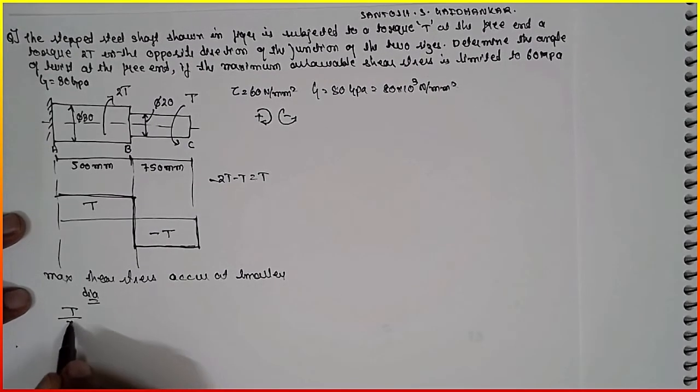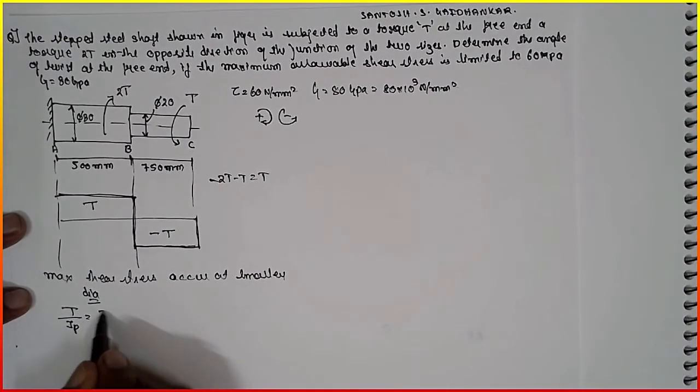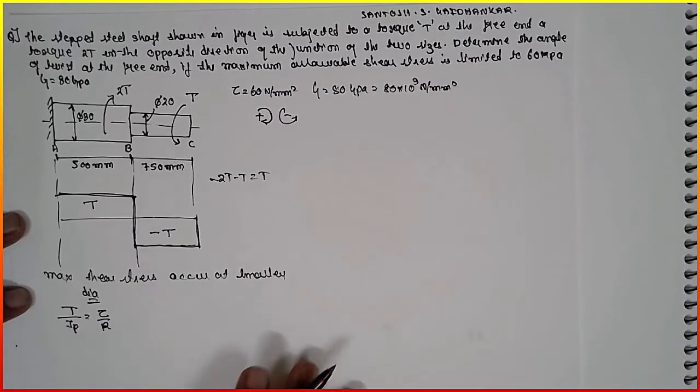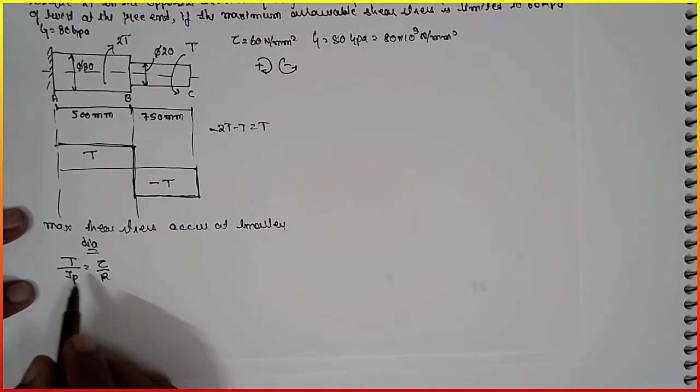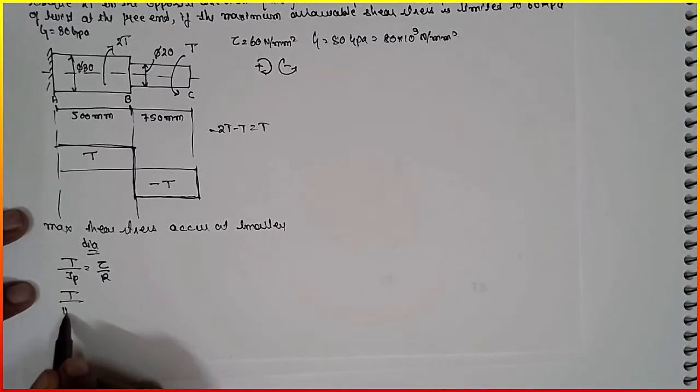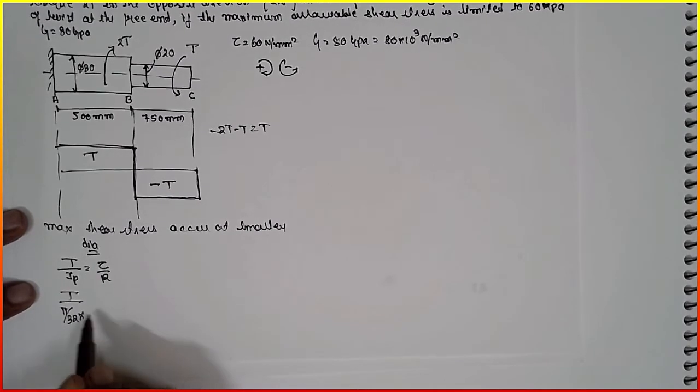T divided by Jp is equal to tau divided by R. Now substitute the value. T divided by pi by 32 into D raised to 4.